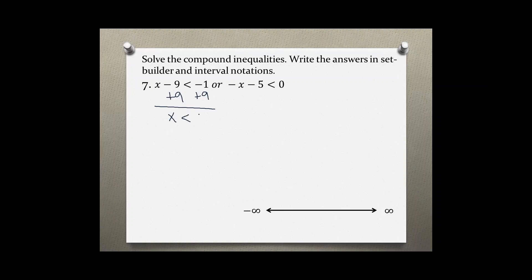So x is less than eight. And then take the second inequality and solve for x, and we'll add five on both sides. So negative x is less than five.